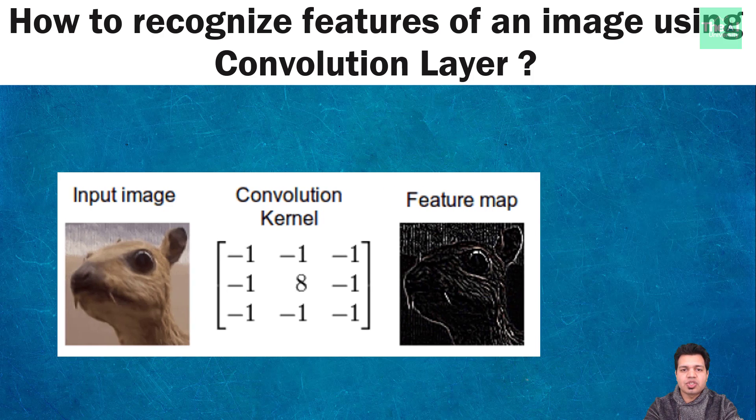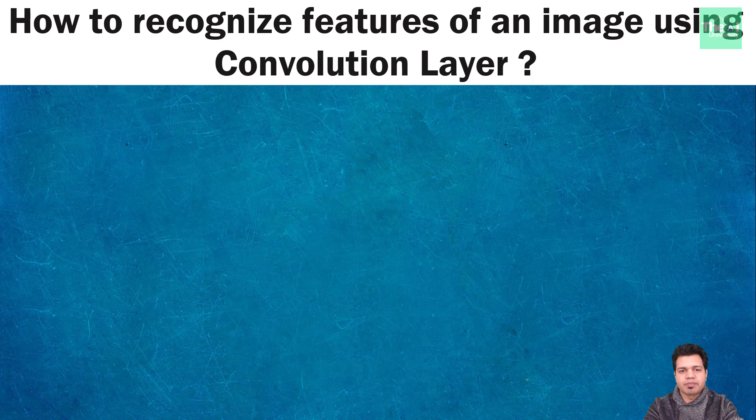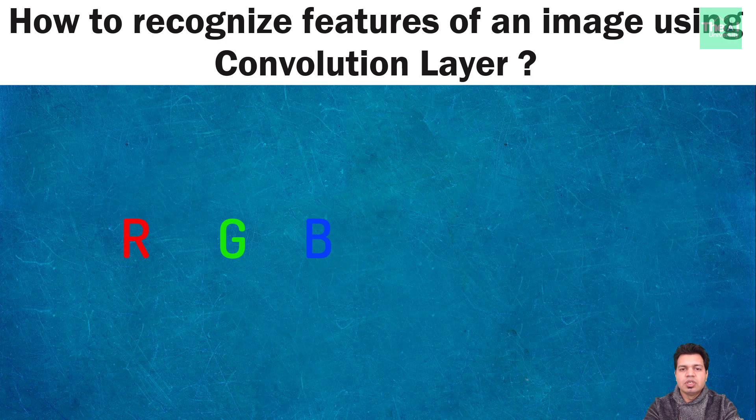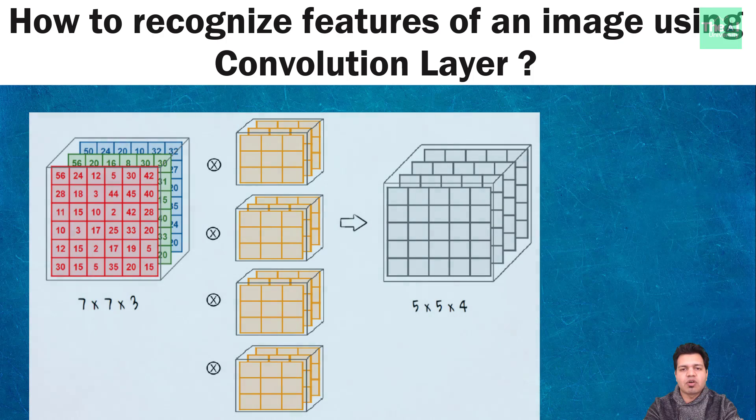Now what if we have a color image and we want to apply convolution operation on it? A color image is 3D or three dimensional in nature because it consists of three colors namely red, green and blue. So let's say you have a 7 by 7 pixel image with a 3 channel of RGB colors then our image data would possess 7 by 7 by 3 pixels.